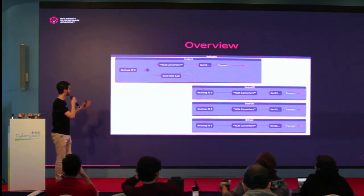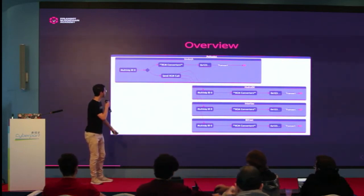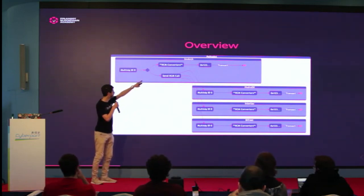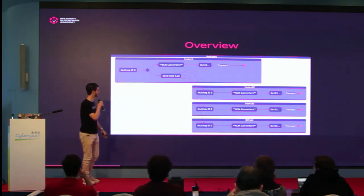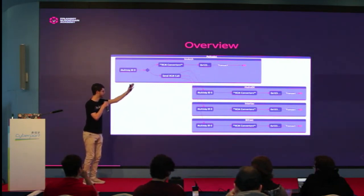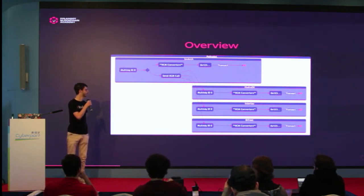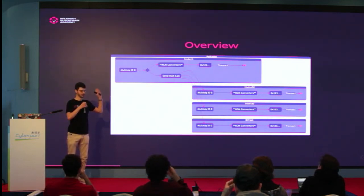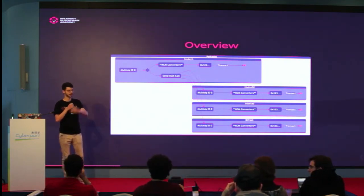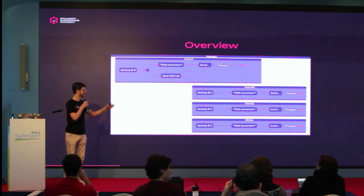This is an overview of how that happens. On top here, this is where the multi-sig originates. If we want to transact directly on that same network, we just derive the account using these XCM converters, which I'll cover in the next slide. We derive an account — in this case it's 0x123 — and transact. If we want to transact in a different network, we send an XCM call to the other network, and once it reaches the other network, it goes through that account derivation using the same XCM converters to derive that same exact account and transact.